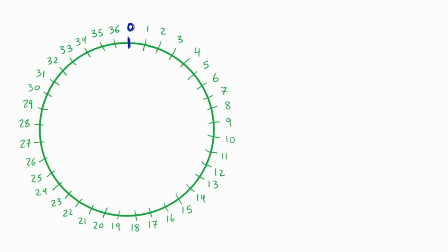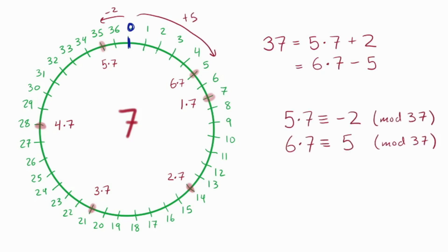Let's watch it happen now for a modulus of 37. Suppose we want to find the inverse of 7 modulo 37. We can use the division algorithm to find that 37 is 5 times 7 plus 2, and 6 times 7 minus 5. So what have we learned in modular language?